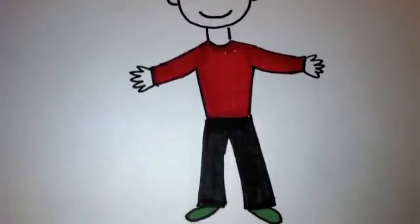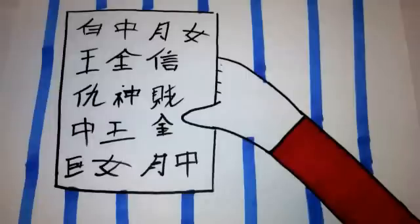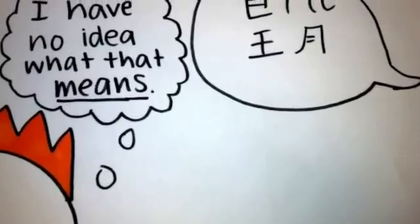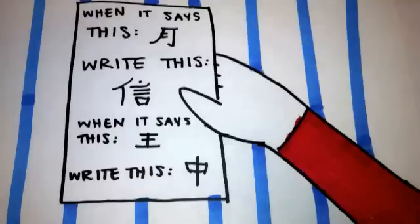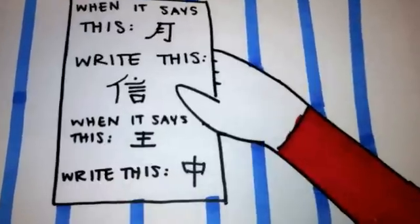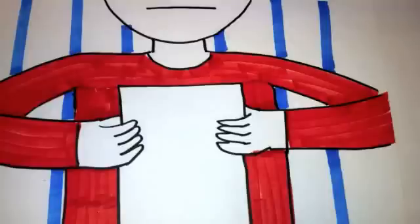Imagine that instead of living your regular happy life, you are trapped in a Chinese room. While in the Chinese room, you are handed a piece of paper full of Chinese characters. As you have never been able to understand Chinese, you have absolutely no idea what any of those characters mean. At some point, you are given another piece of paper that tells you what to write for each corresponding character. You are given more pieces of paper with Chinese characters and told what to write in response. This continues until eventually you can predict the appropriate character for each character you are given.